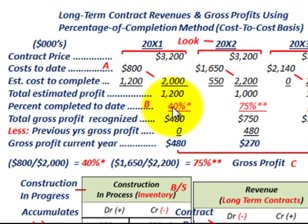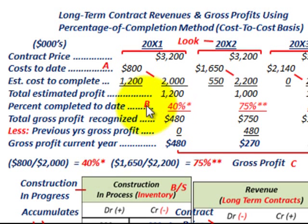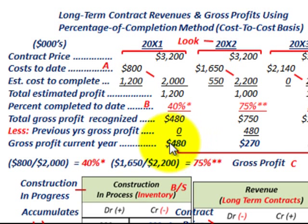Next, we allocate the total estimated profit based on cost. We take our cost-to-date of $800 and divide it by the total estimated cost of $2,000. That gives us 40% — the percent completed to date on this contract. Taking 40% times the total estimated profit of $1,200 gives us a total gross profit recognized of $480. Since there's no previous year's gross profit, the gross profit for year 20x1 is $480.